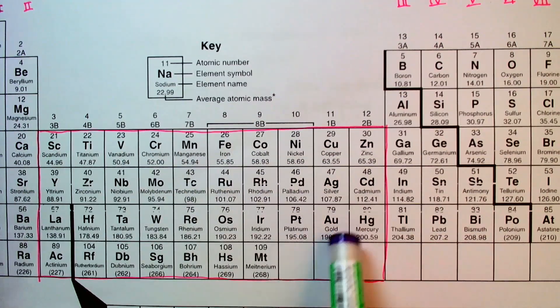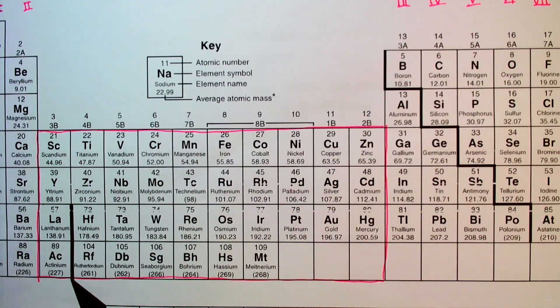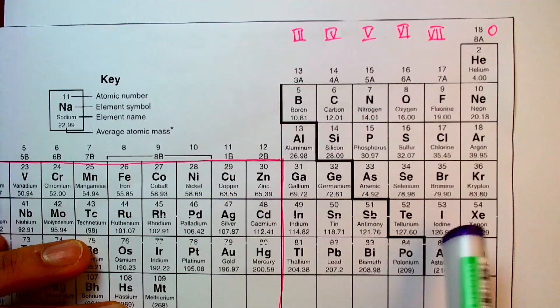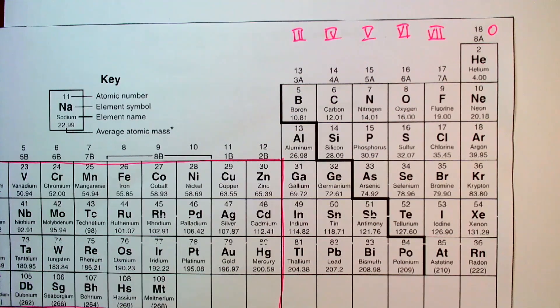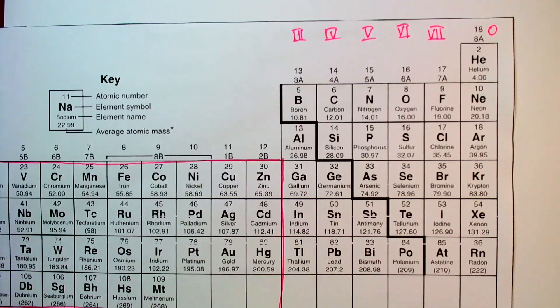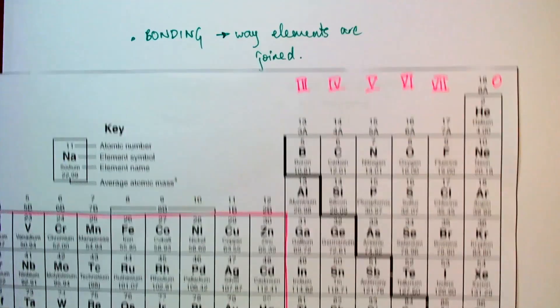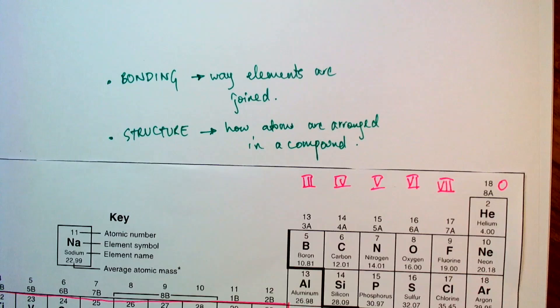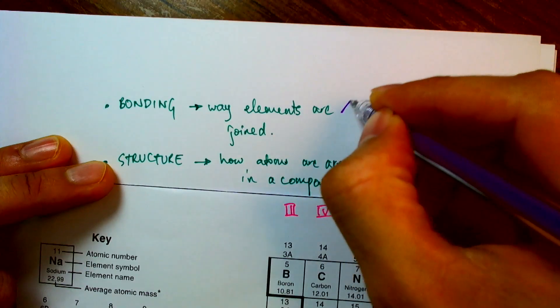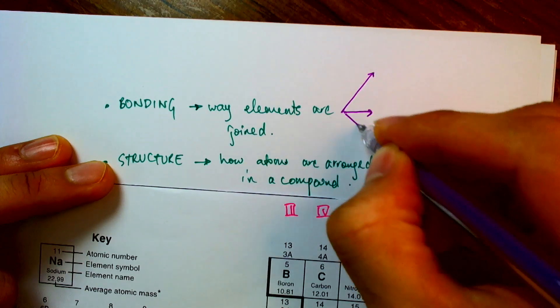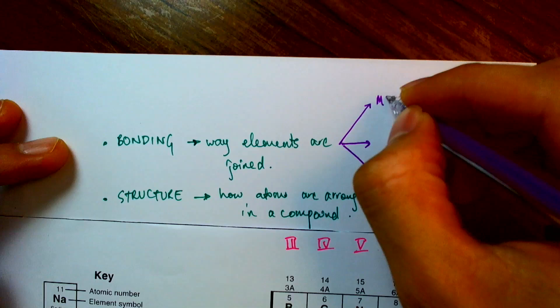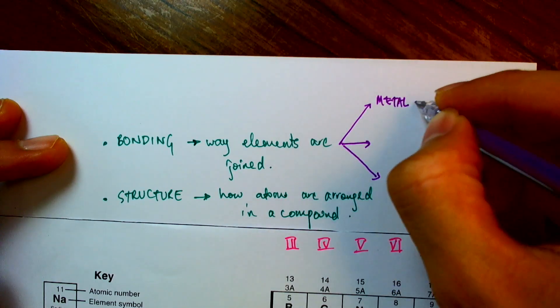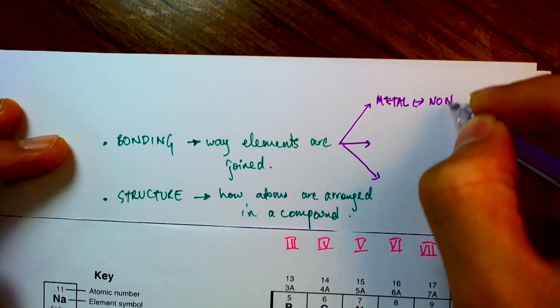and the metals have properties in common. For example, they are good conductors of electricity, good conductors of heat, whereas the non-metals are generally poor conductors of heat and they don't conduct electricity well at all. So we can categorize these types of bonding into the three types,